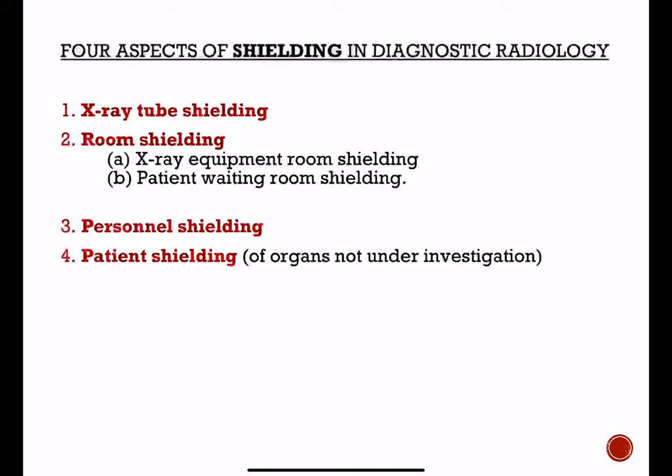There are four aspects of shielding in diagnostic radiology: x-ray tube shielding, room shielding — which includes x-ray equipment room shielding and patient waiting room shielding — personal shielding, and patient shielding of organs not under investigation, meaning areas that should not be exposed should be provided with shielding.